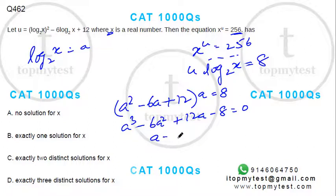This is (a minus 2) whole cube: a³ minus 3 times a² times 2 plus 3 times 2² times a minus 2³. This is equal to 0, which means a should be equal to 2.